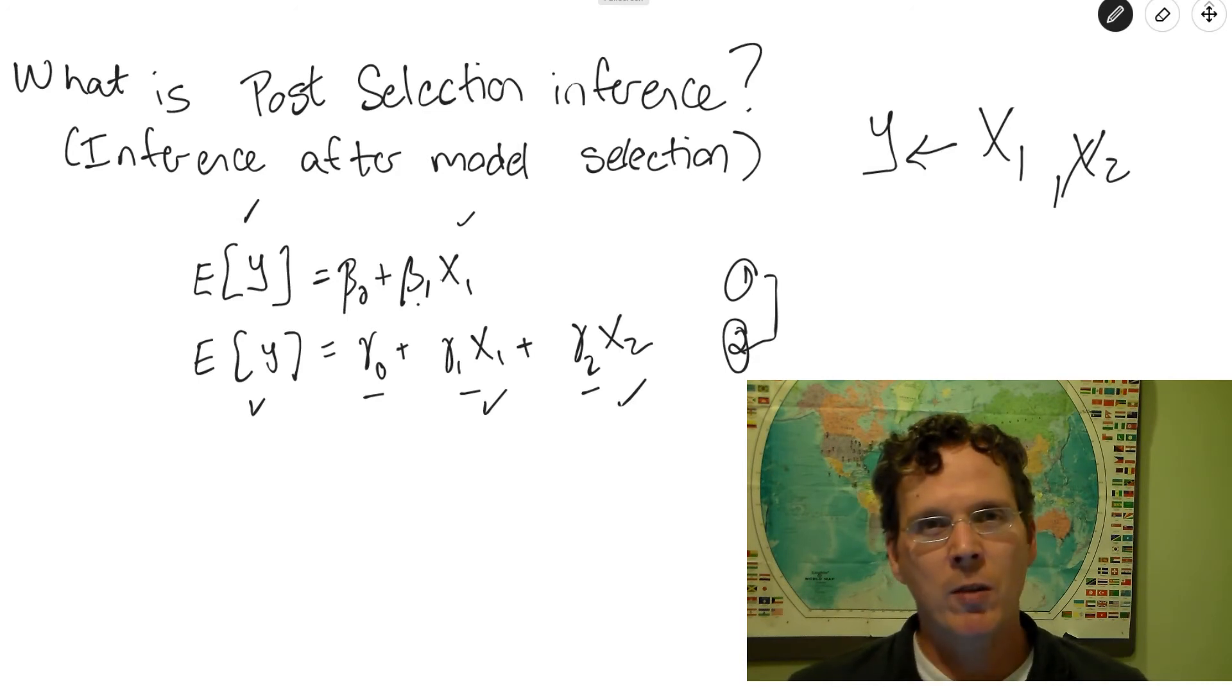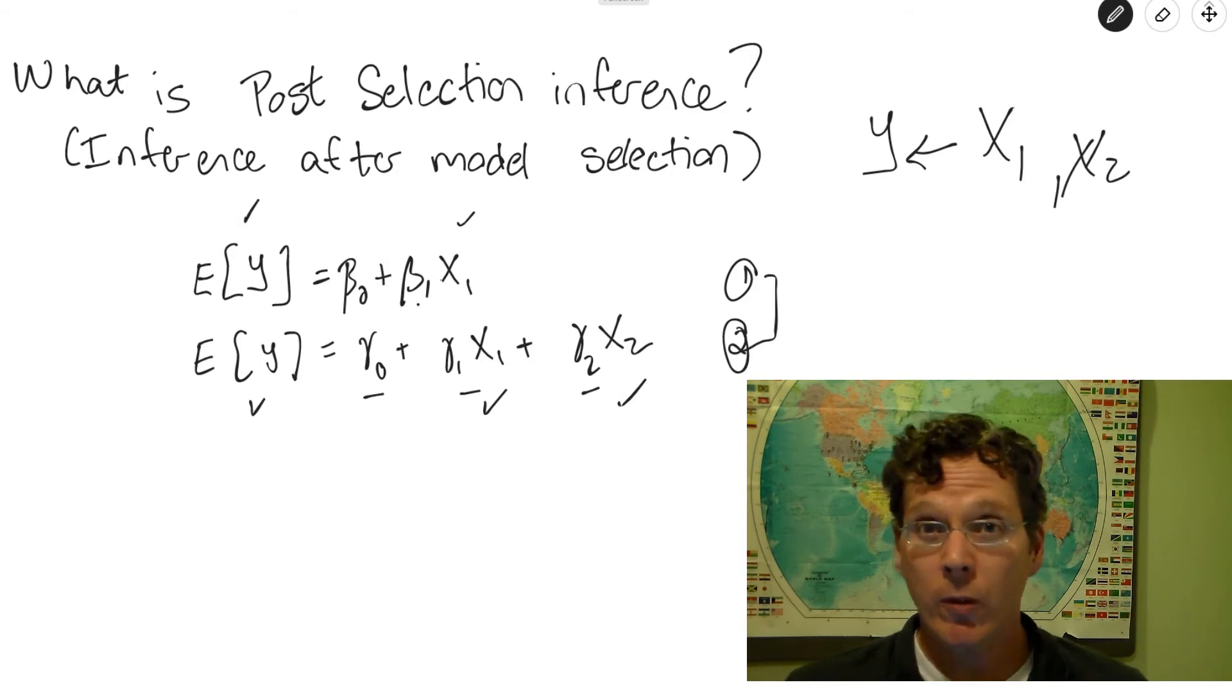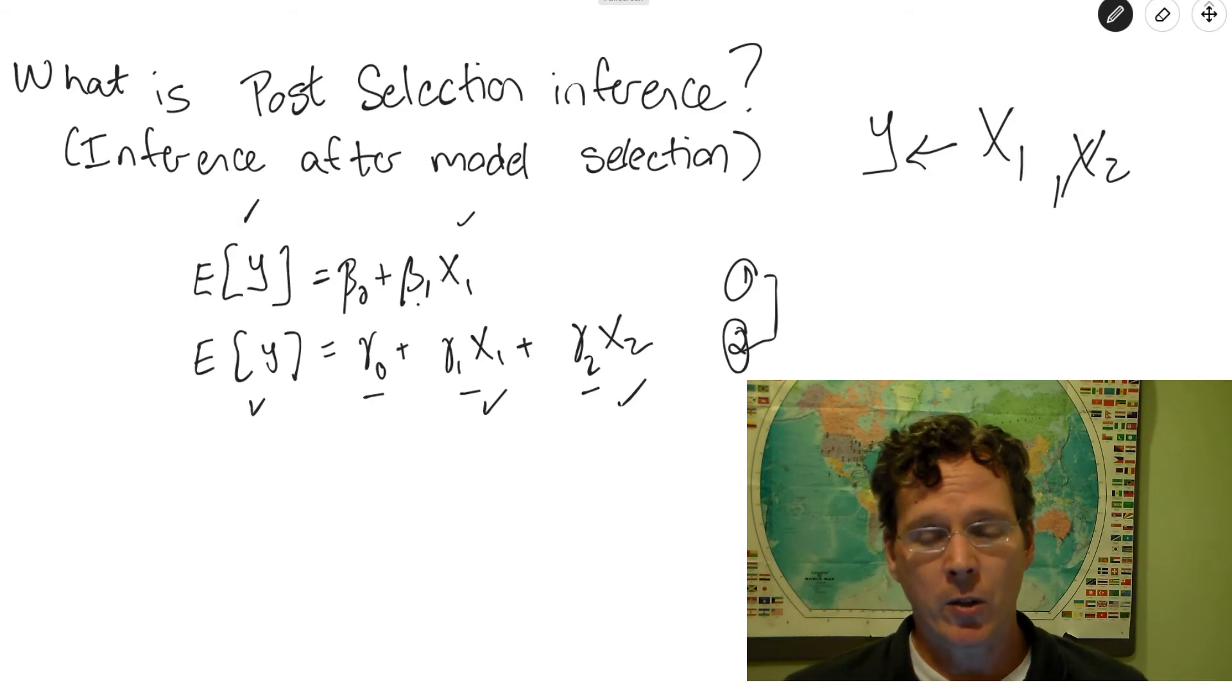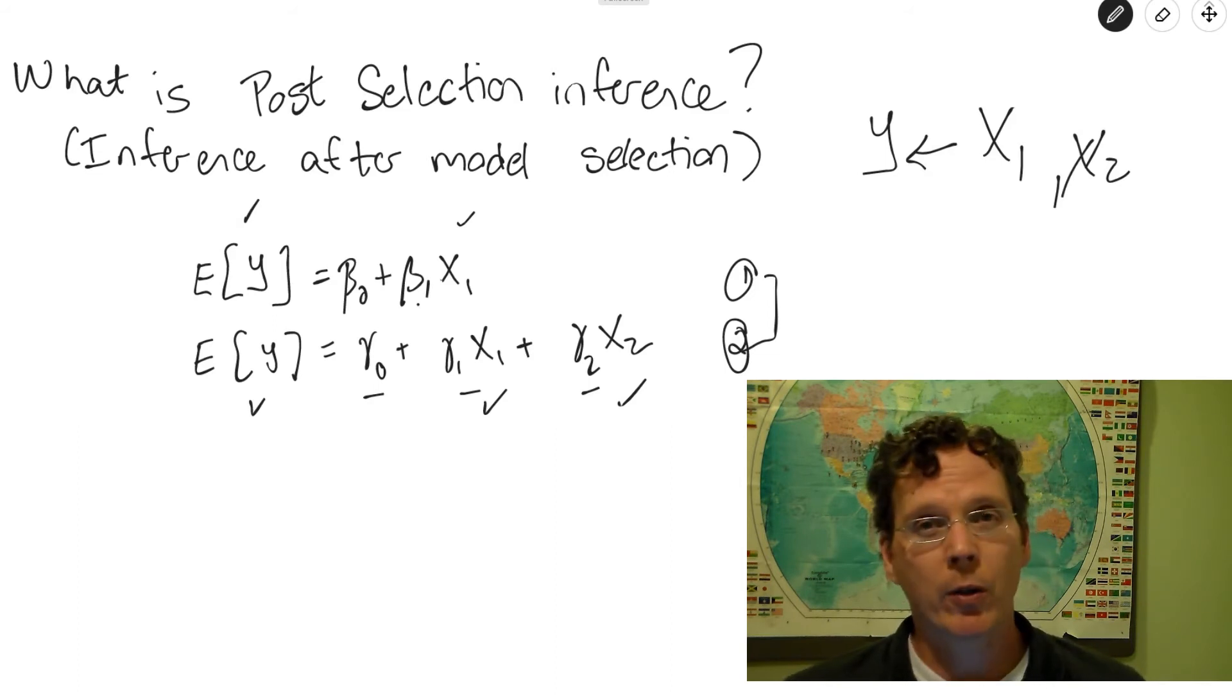Okay, and this is the fundamental idea, I think, behind model selection inference, is that you have this process, the model selection part, that you have not accounted for when you're talking about your inference. Now, there's other aspects to this model selection inference that also make it hard. For example, the hypothesis that you're testing is often arrived at randomly through a random model selection process, right? Your beta 1 and gamma 1 are interpreted differently between these two models. So that's another problem.